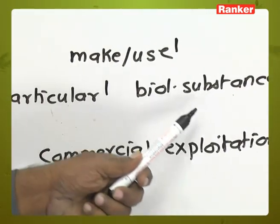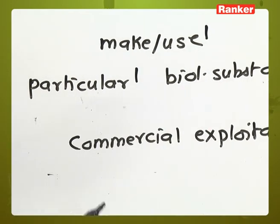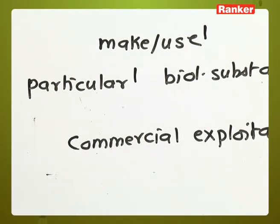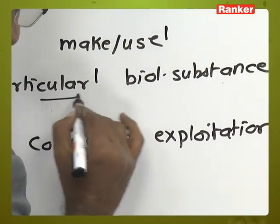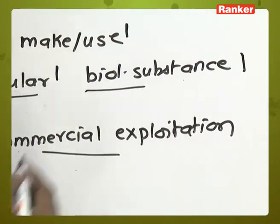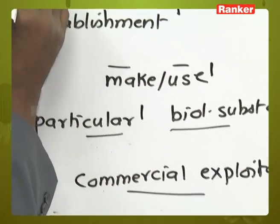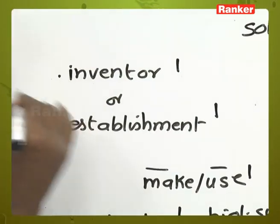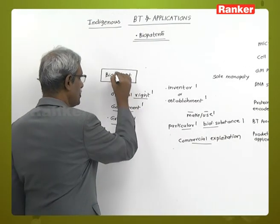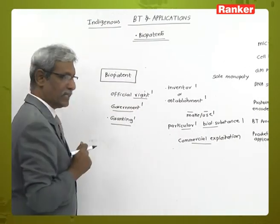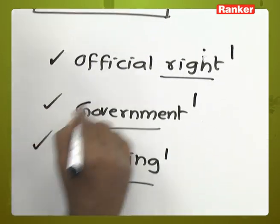You are using a particular bioresource or biological substance for commercial exploitation. So whenever you are using a specific biological resource for commercial exploitation — either you make it or you use it, whether you are an individual or an establishment — the government gives you a grant or official right termed as a biopatent.